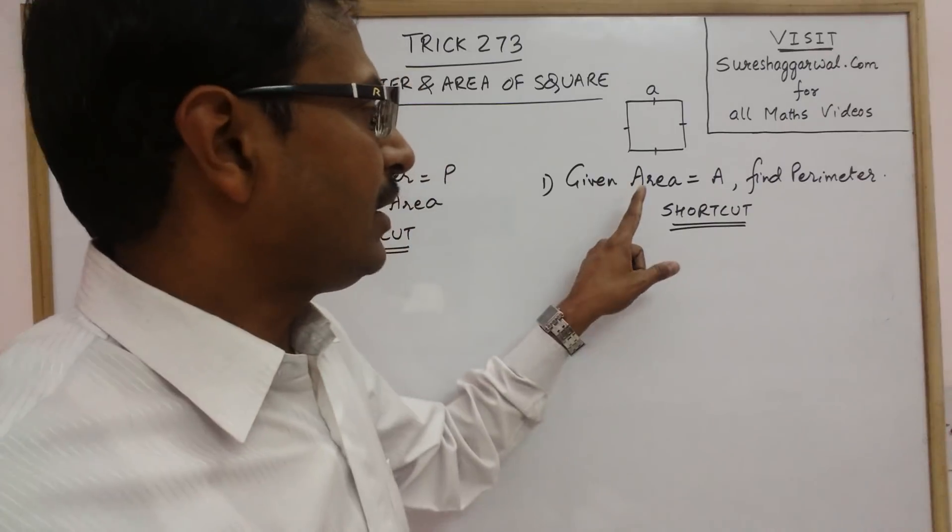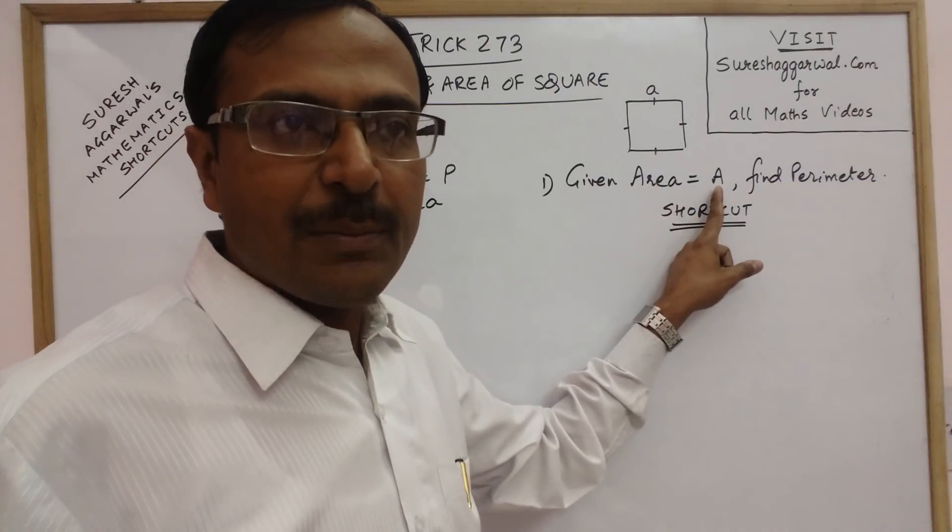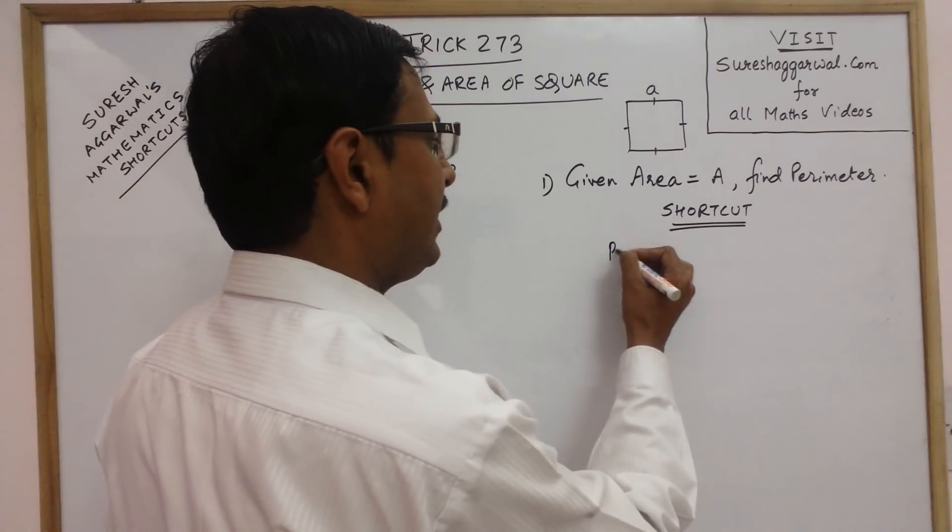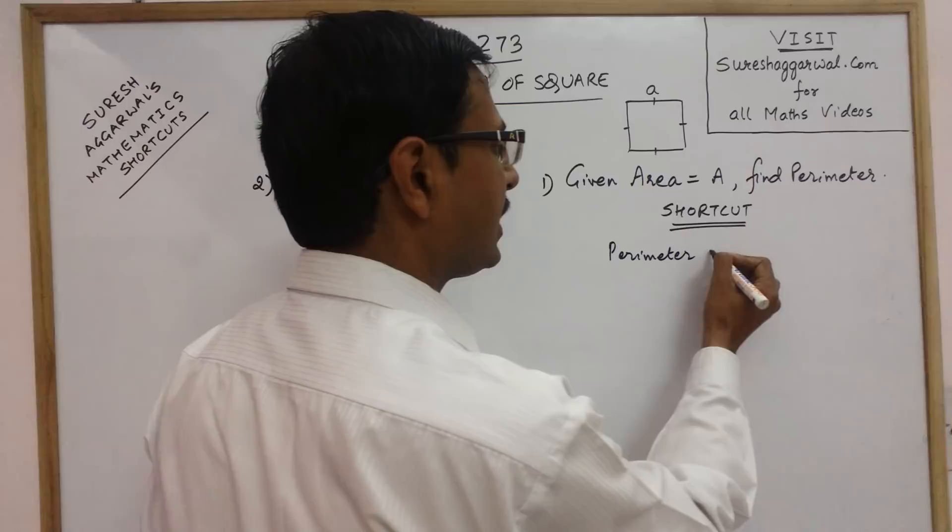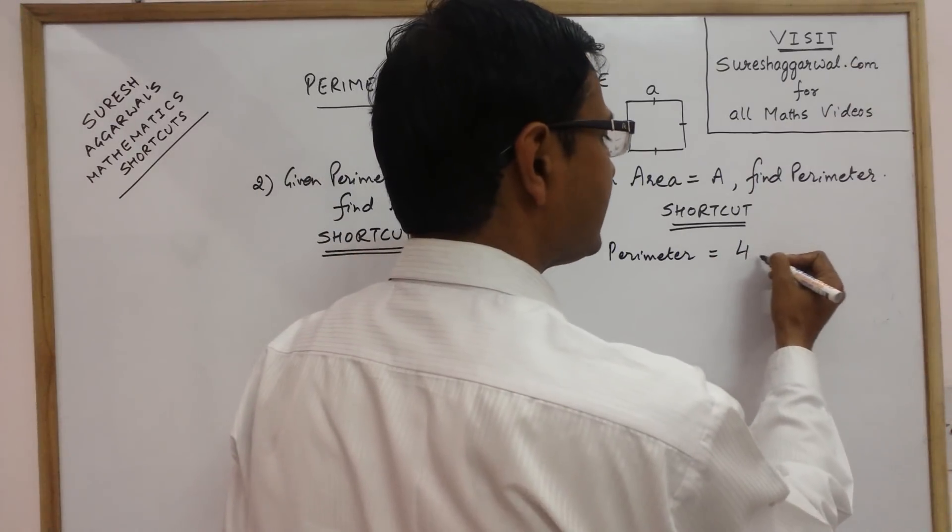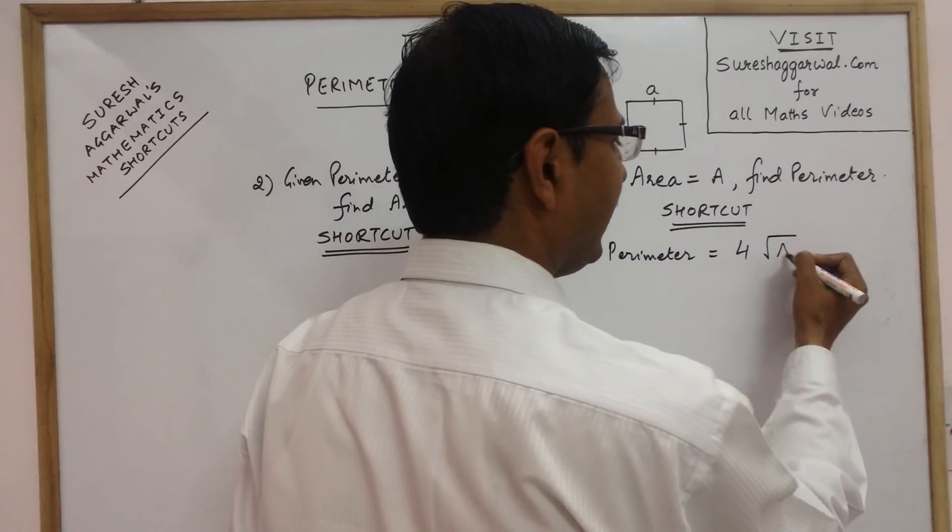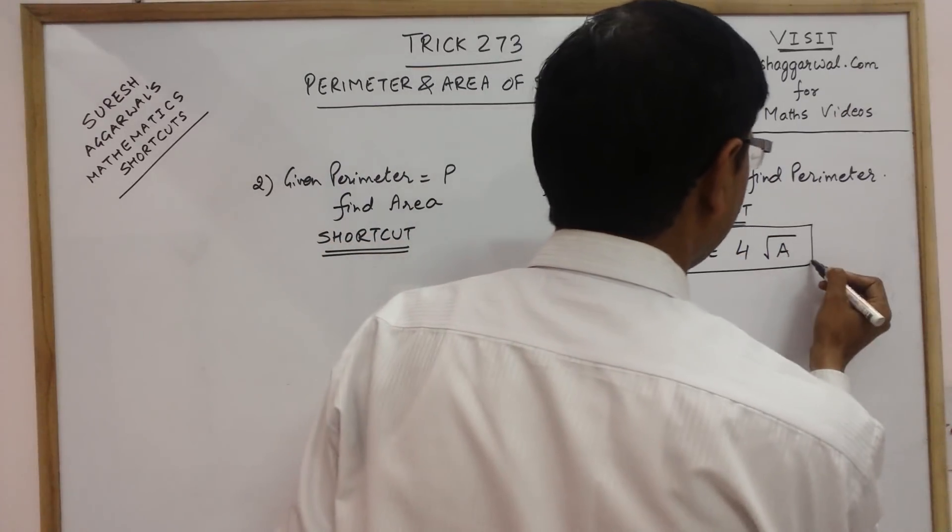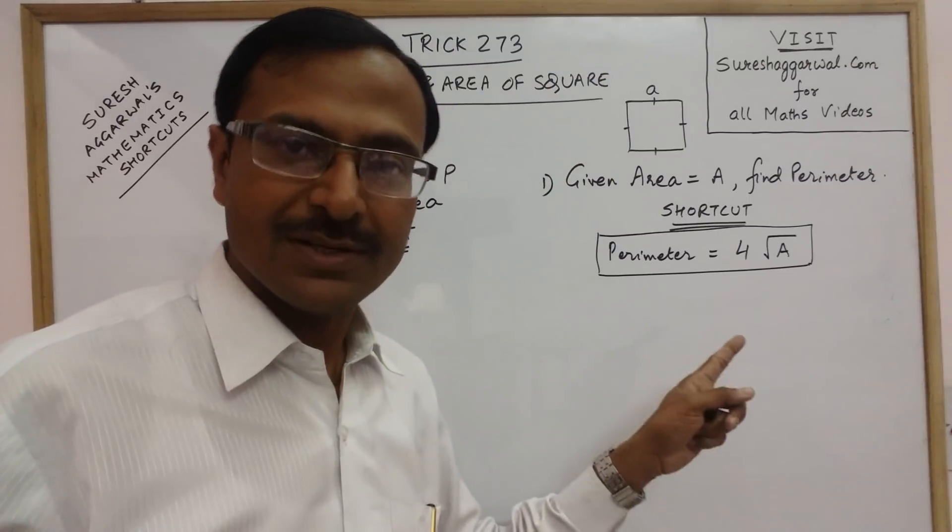Whenever the area is given, I represent the area by A. Then we have to find the perimeter. The perimeter is found by using the very easy formula of four times square root of the area. So if the area is known, you can find the perimeter using this shortcut.